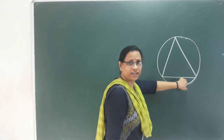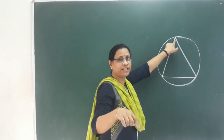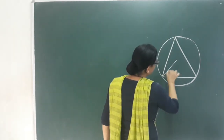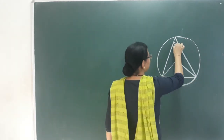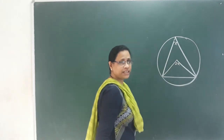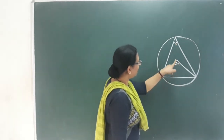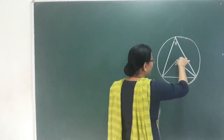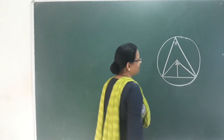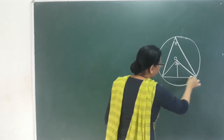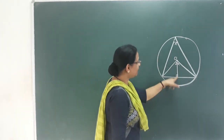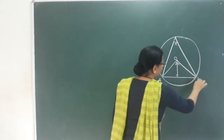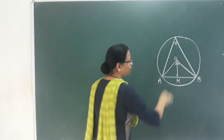We learn a triangle inscribed in a circle. The topic is called circle and triangle. In this angle, we learn a circle with a central angle of two x. I am going to add a perpendicular height here from the center. This is a perpendicular that bisects AB. AB is a chord and OM is the bisector.